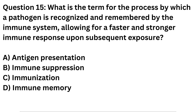Question 15. What is the term for the process by which a pathogen is recognized and remembered by the immune system, allowing for a faster and stronger immune response upon subsequent exposure? A. Antigen presentation. B. Immune suppression. C. Immunization. D. Immune memory.